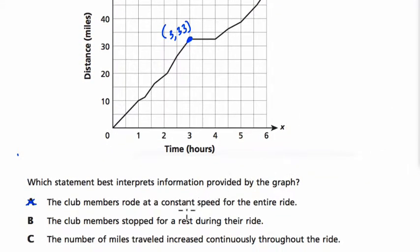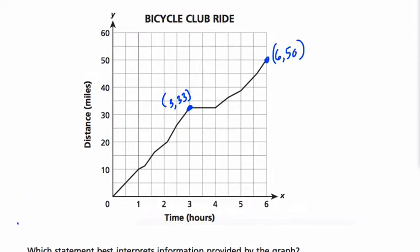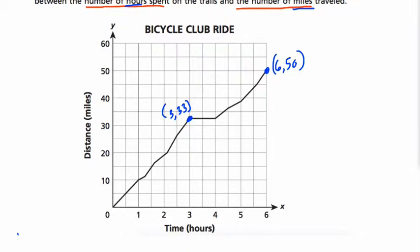The club members stopped for a rest during their ride. Well, let's take a look. Does that seem reasonable? I'm looking at this part of the graph right here. And I'm noticing that from 3.33 over to this point, 4.33, right?